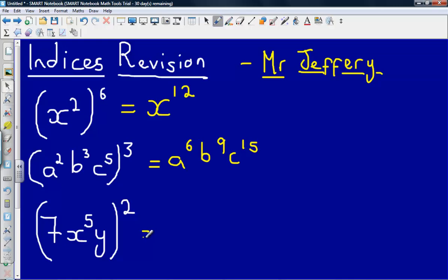Next part, again treat each part individually, this is the bit that usually catches people out, this value of 7 here. So again treat each part individually, 7 raised to the power of 2, or 7 squared simply gives us 49.